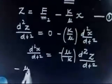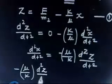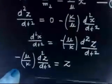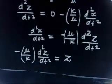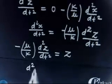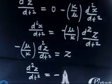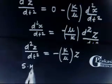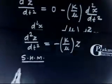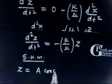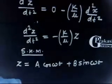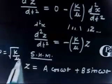Substituting back, the equation becomes d²Z/dt² equals -(K/μ)·Z. This is the equation of simple harmonic motion. Solving it gives Z = A·cos(ωt) + B·sin(ωt), where ω = √(K/μ). We now have two constants A and B, which we will find using boundary conditions.